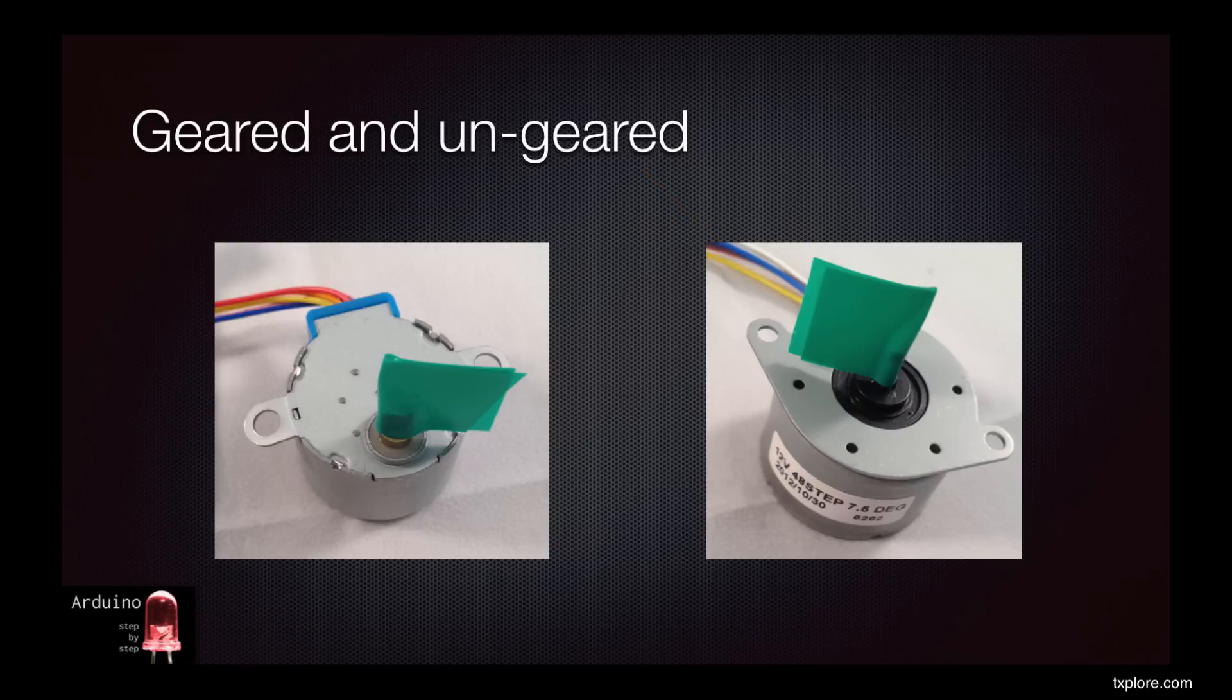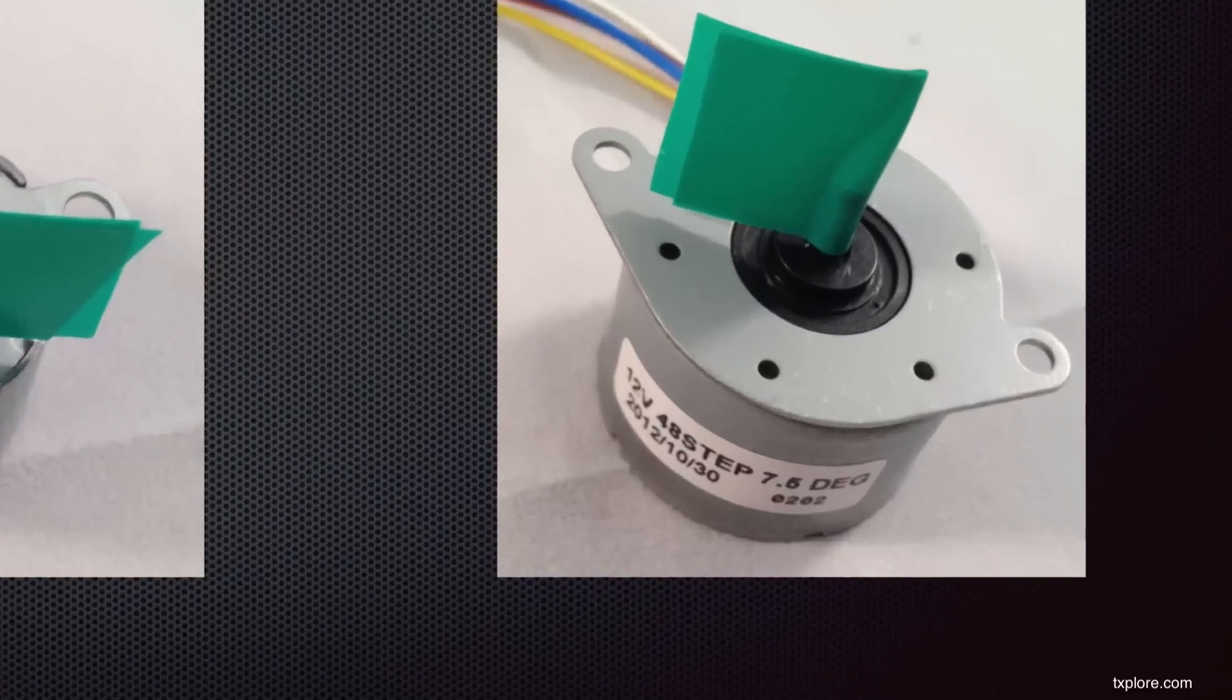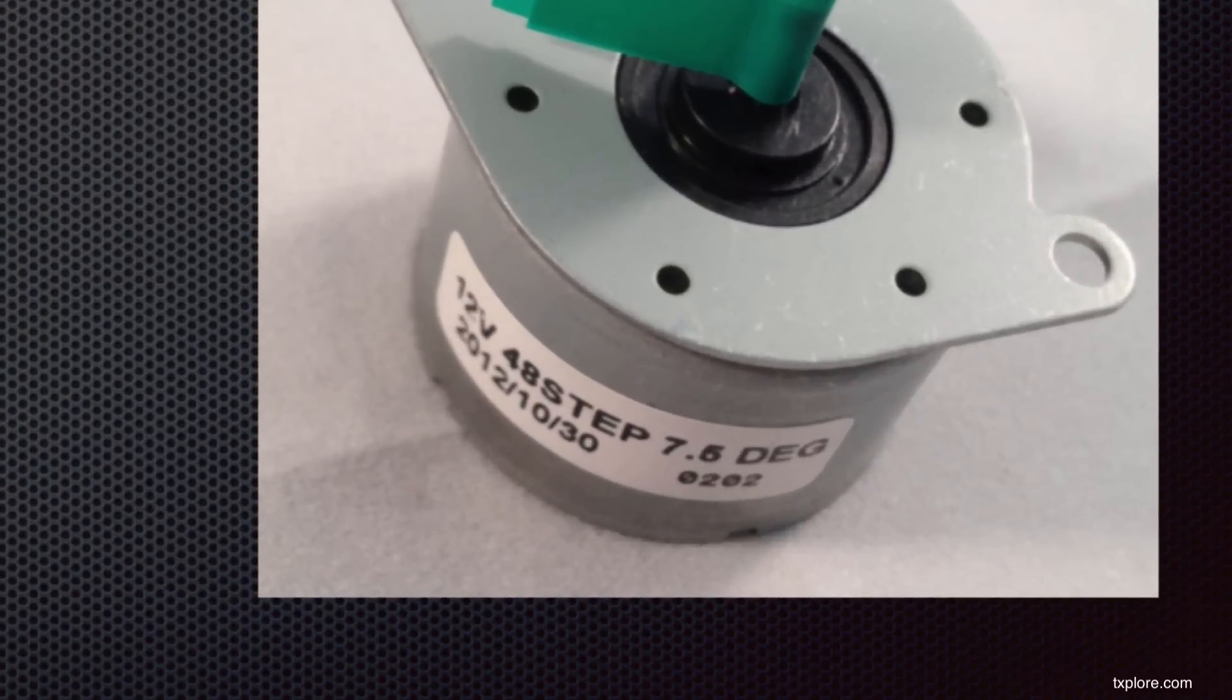You may be able to read the label stuck on the package. It reads 12V 48 step 7.5 degrees. That means that the input voltage for each coil is 12 volts so that you must use a motor driver to supply the power. Each 360 degree full rotation is achieved with 48 steps and each step rotates the shaft by 7.5 degrees.